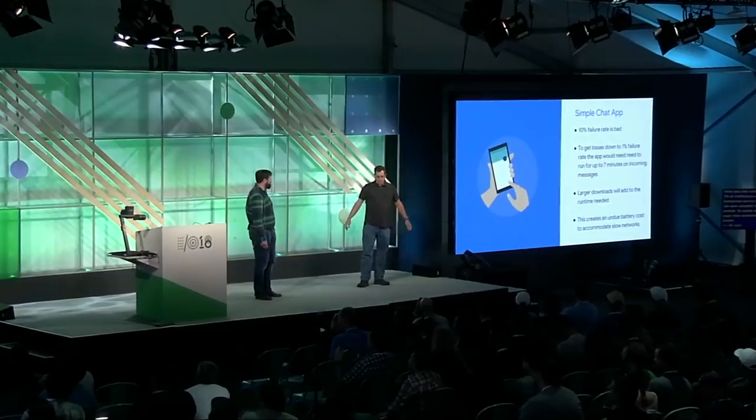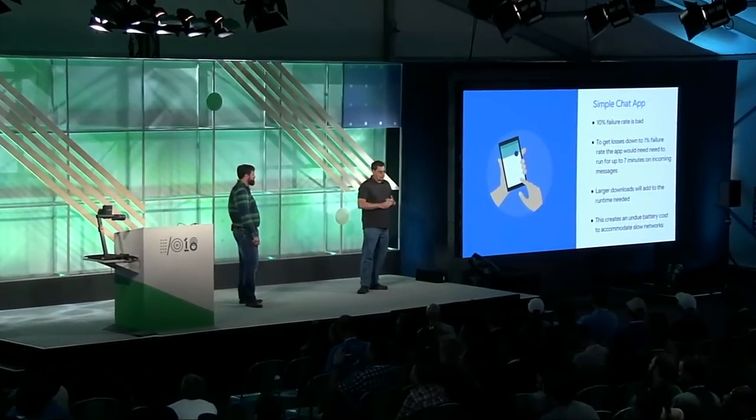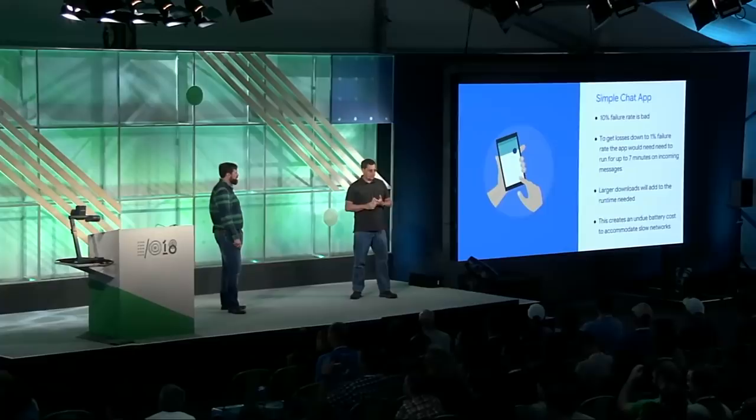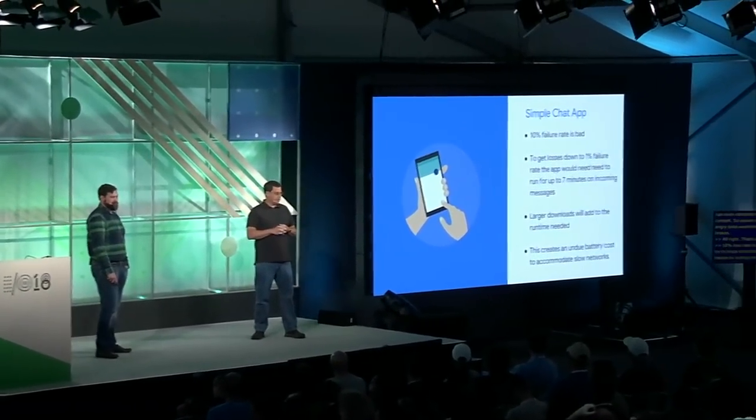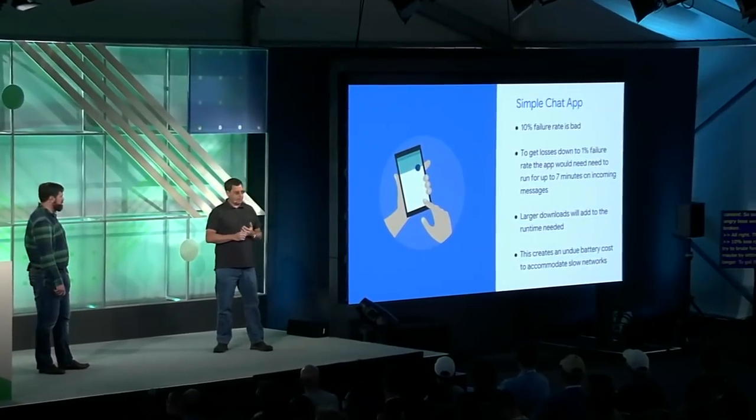A 10% loss rate is pretty bad. We could try and brute-force this — letting the app run for a lot longer. To get the failure rate down to under 1%, we have to let the app run for seven minutes in response to each message. Clearly, that's a lot of battery spend on users. A user on a poor quality network would have a really bad experience having their device run for seven minutes for every message, and they might prefer to choose when to download that content.